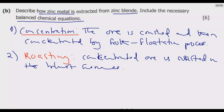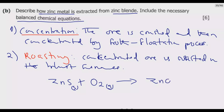The roasting is given by this equation: zinc sulfide (solid) is roasted in the presence of oxygen (gas) to give zinc oxide (solid) and sulfur dioxide (gas). Since the question requires us to write the balanced chemical equation, we need to balance this. We have two oxygens on one side, giving two plus one which is three, so we need to balance accordingly.